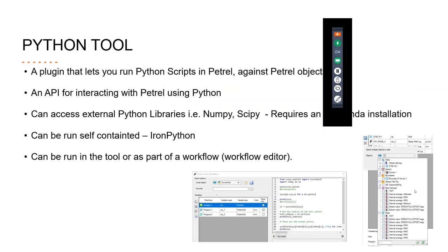The Python tool is a plugin that lets you run Python scripts in Petrel against Petrel objects. Essentially, it's an API for interacting with Petrel using Python, and this is the value we're adding here. You can access external Python libraries such as NumPy and SciPy, but this requires that you have an Anaconda installation on the site. You can run scripts self-contained using built-in Python, but this will restrict access to external libraries. The scripts can be run in the tool or as part of a workflow, meaning they can be integrated into the Petrel workflow editor.